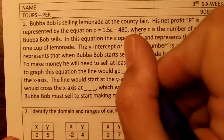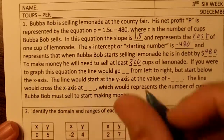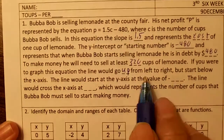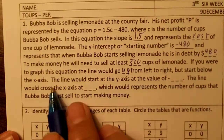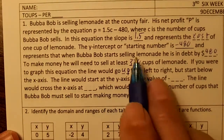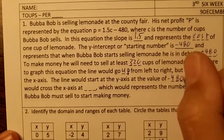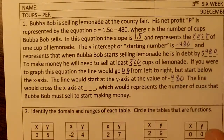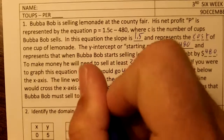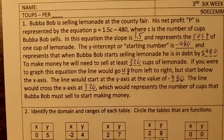If you were to graph this equation, the line would go up because the slope is positive, from left to right, but start below the x-axis. The line would start at the y-axis at the value of negative 480, and would cross the x-axis at 320, which represents the number of cups Bubba Bob must sell to start making money.